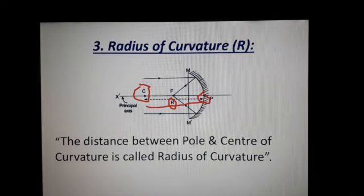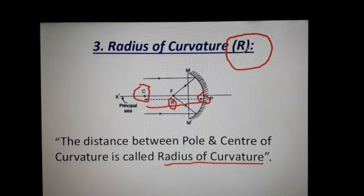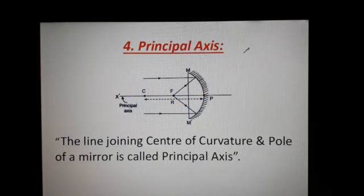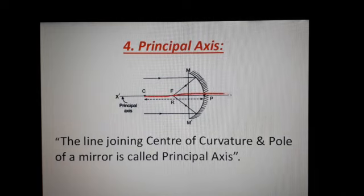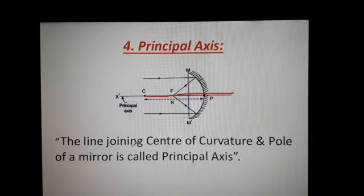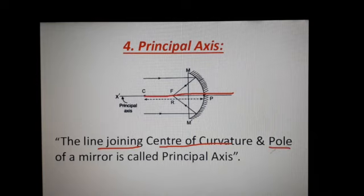The radius of curvature is denoted by the symbol R. Next, the principal axis: the line joining the center of curvature and the pole of the mirror, extended to both sides, is called the principal axis.